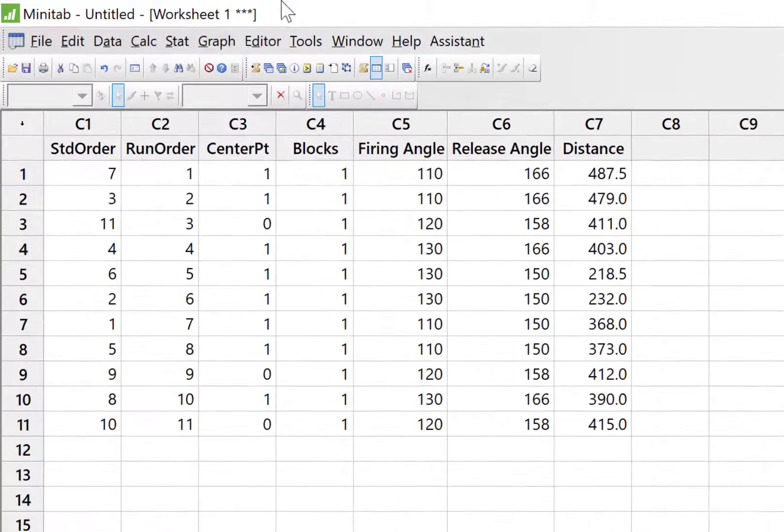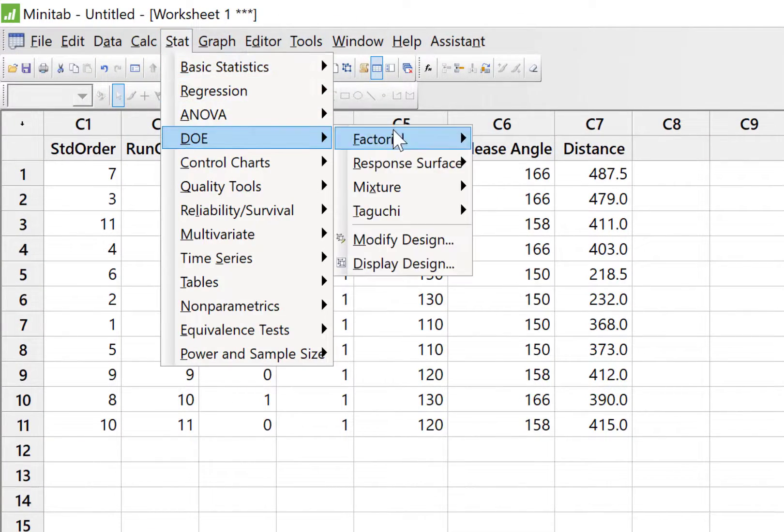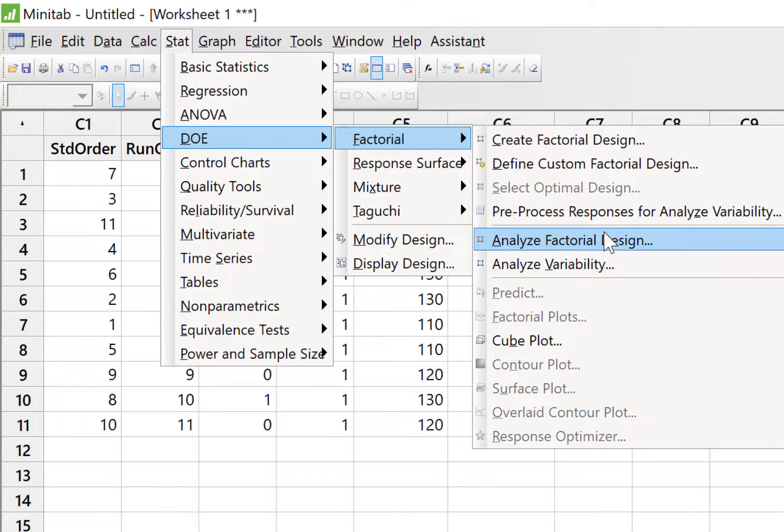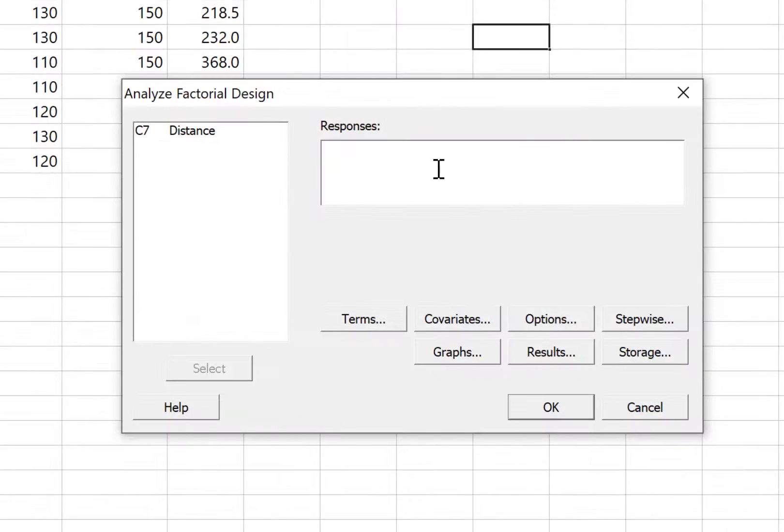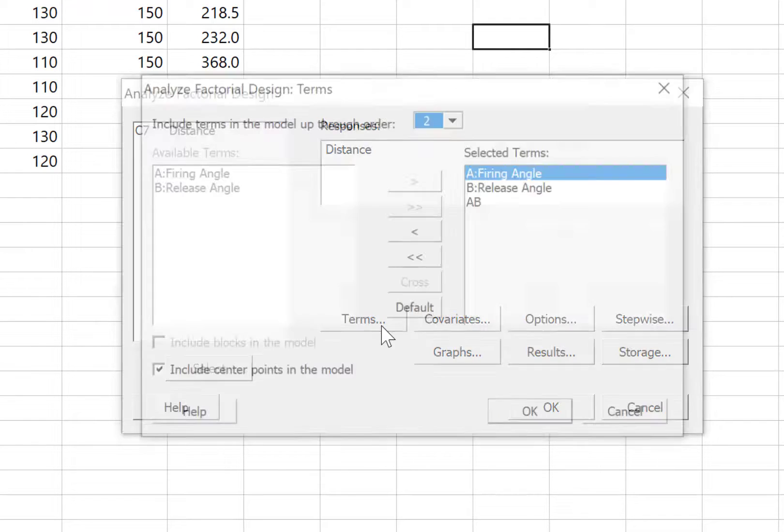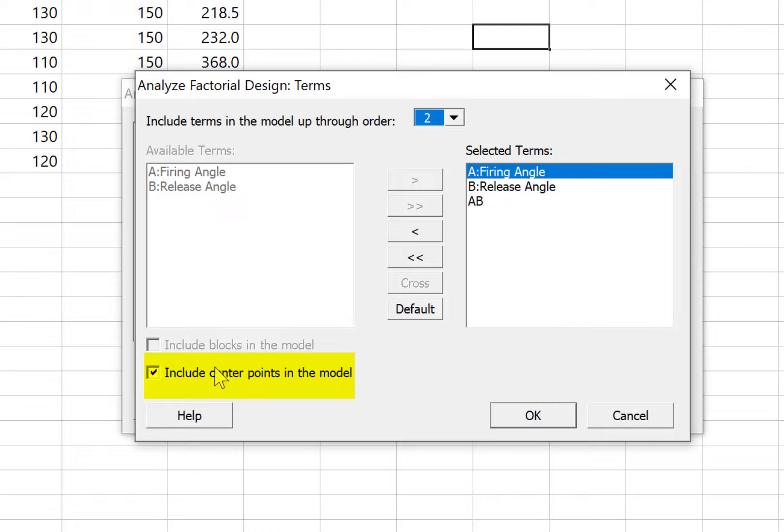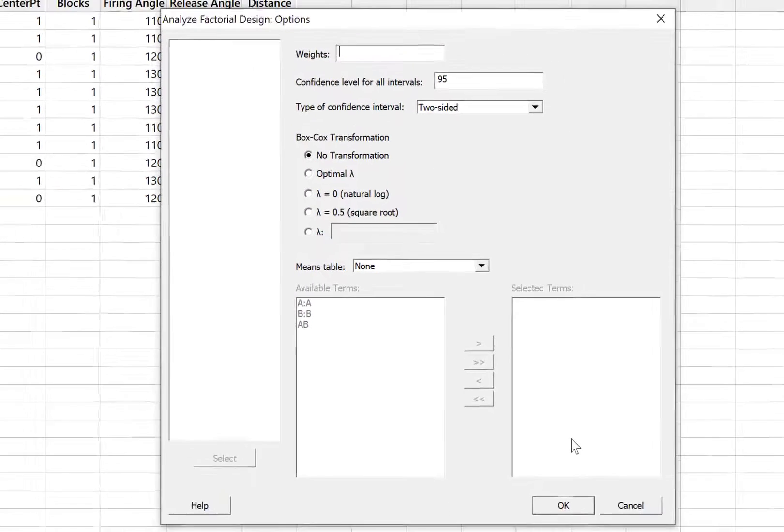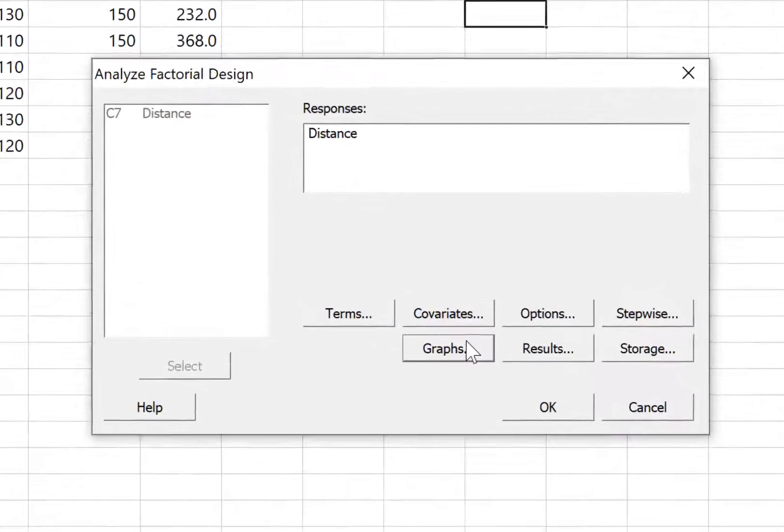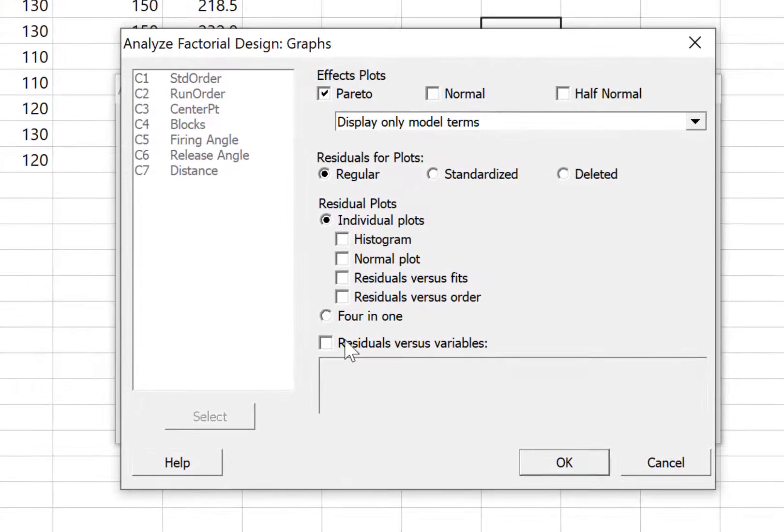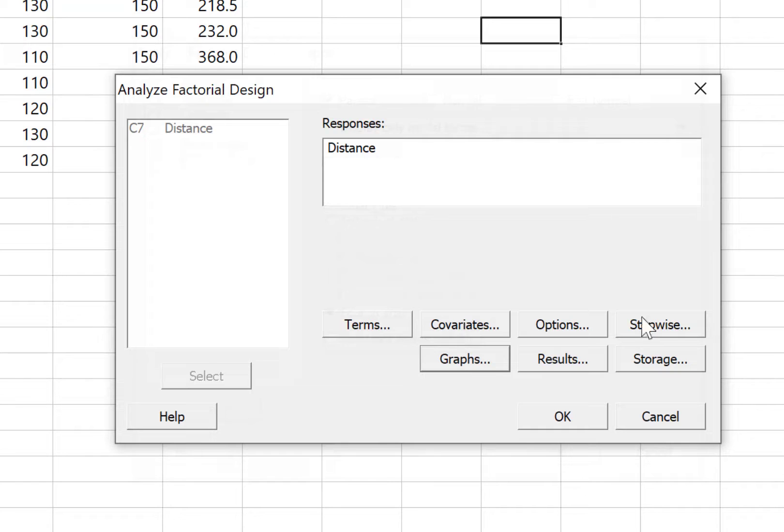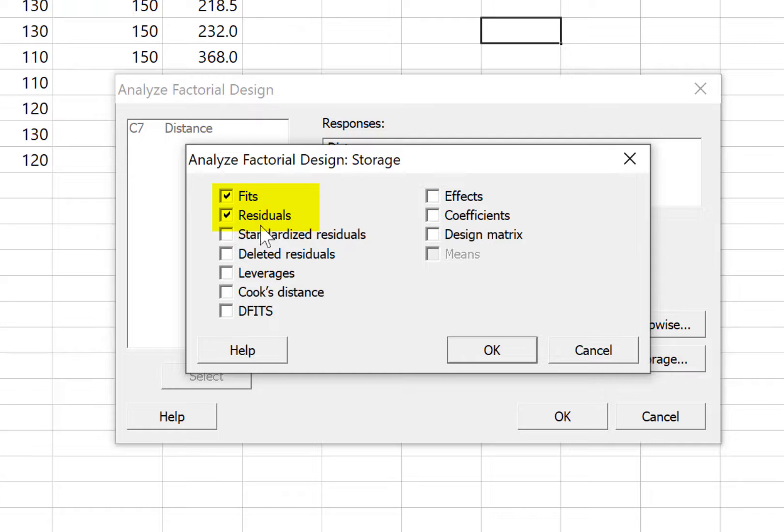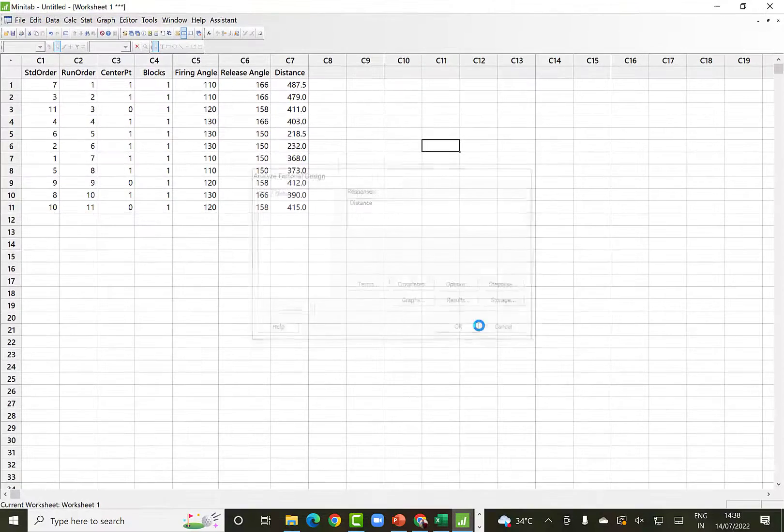Now we can use the stat, DOE factorial, analyze factorial design command. In the first dialog box, we select distance as the response. And in the terms, we leave default values and include center point in the model is already selected. We click OK there. In the options, we don't need to select anything. We leave the default values. In the graphs, we select four in one. And in the storage, we can select the fits and residuals. And we click OK and OK finally to get the output of the design.